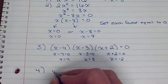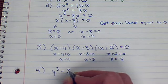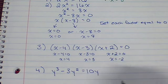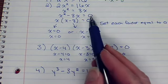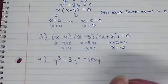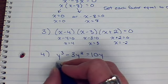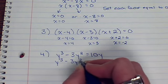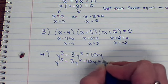Now, let's look at number 4. y cubed minus 3y squared equals 10y. Uh-oh. Let's look back up here. Let's get 0 on one side by itself. That makes life so much easier.